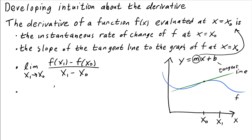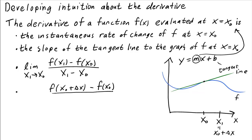Equivalently, we could write the slope of the secant line from the point x0 plus delta x to the point x0 — calling x1 equal to x0 plus delta x. Then the change in x is simply delta x, and we let the change go all the way towards 0, taking the limit as delta x goes to 0. So these things are all the same.